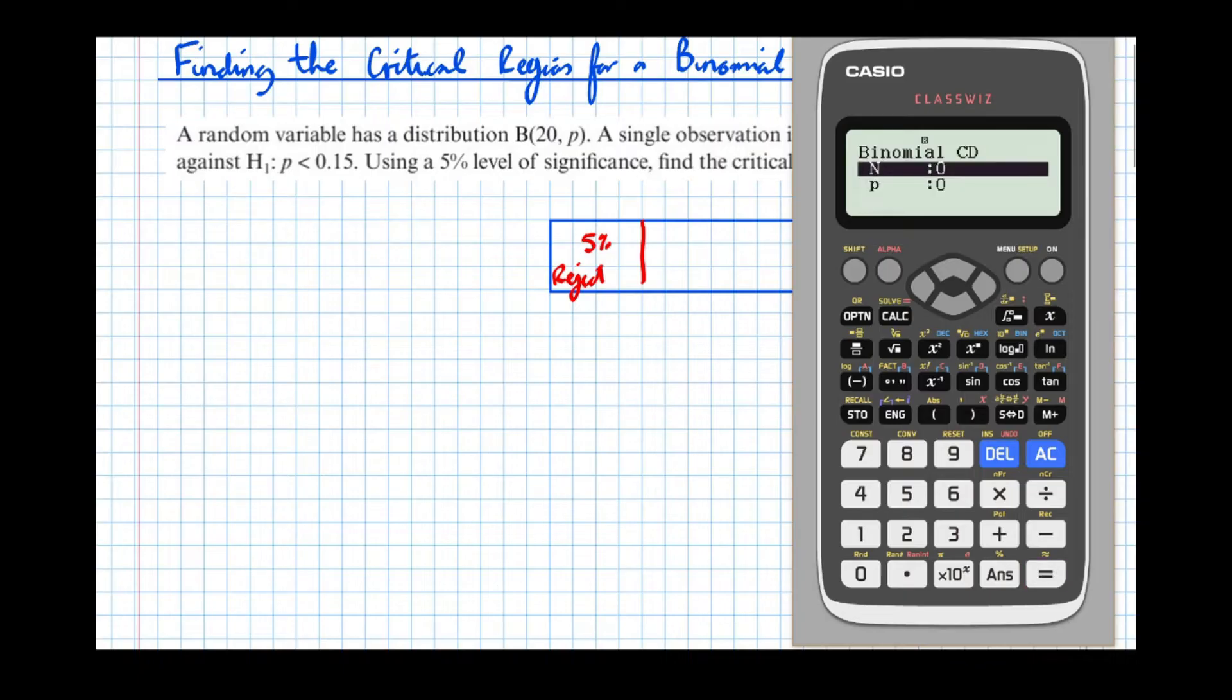OK, I went from 0 to 9. So the number of trials is 20, and the probability we're testing is 0.15. Now this is going to give us the probability that x is less than or equal to all of the observations that we put in before. So let's just calculate them now. And we're looking for it to go below 0.05.